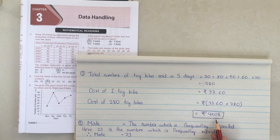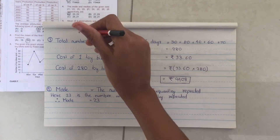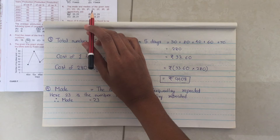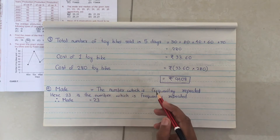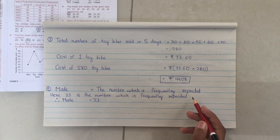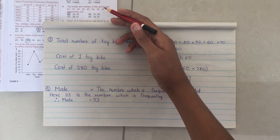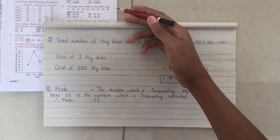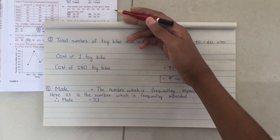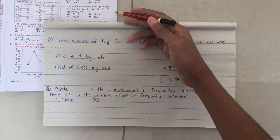Let us move on to the fourth question. In the fourth question, we have to find the mode and the median of the given data. The mode is equal to the number which is most frequently repeated. In the set of numbers, we can see that 23 is the number which is frequently repeated. So therefore, the mode is 23.